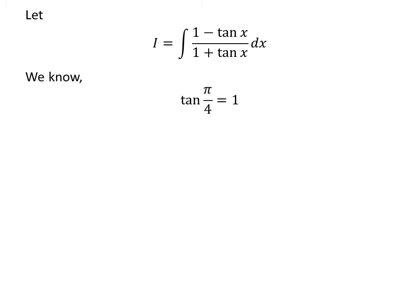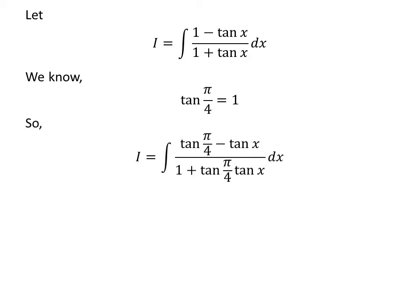We know tangent of pi upon 4 is equal to 1. Plugging this value into the integral, i gives us i is equal to the integral of tangent of pi upon 4 minus tangent of x upon 1 plus tangent of pi upon 4 times tangent of x, with respect to x.